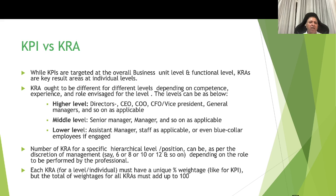KPI versus KRA: while KPIs are targeted at the overall business or functional level, KRAs are the key result areas at the individual level. KRAs ought to be different for different levels depending on competence, experience, and role. Higher levels include directors, CEO, CFO, vice presidents, and general managers; middle levels include senior managers and managers; lower levels include assistant managers, staff, and even blue-collar workers in manufacturing. The number of KRAs — say 6, 8, 10, or 12 — is at management's discretion. Each KRA must have a unique percentage weightage, and all weightages must add up to 100 so the outcome can be quantified.